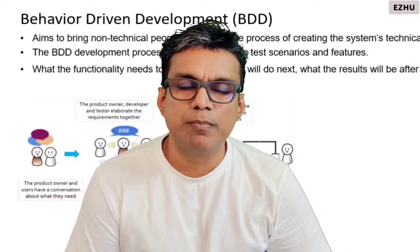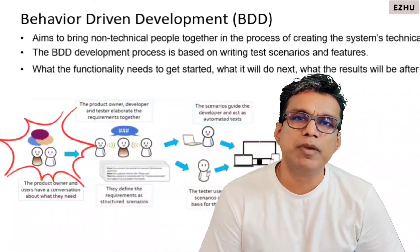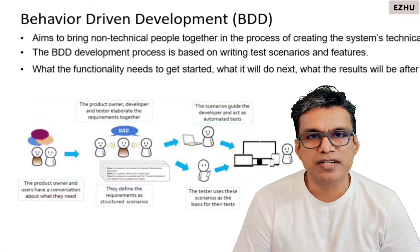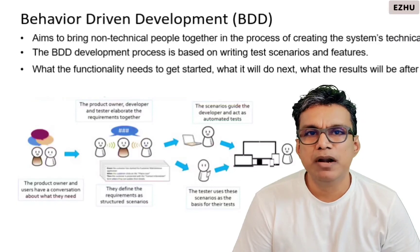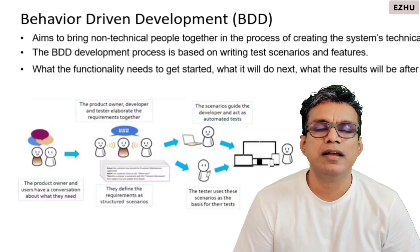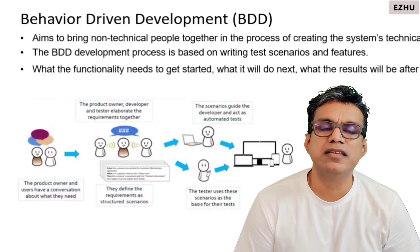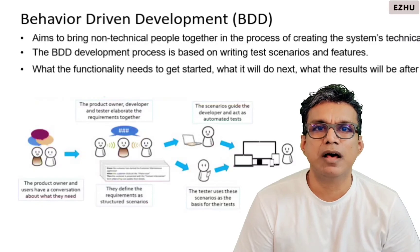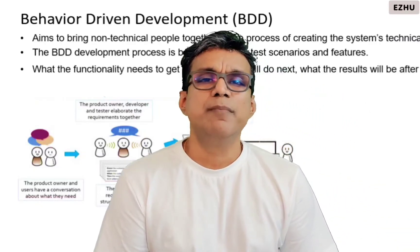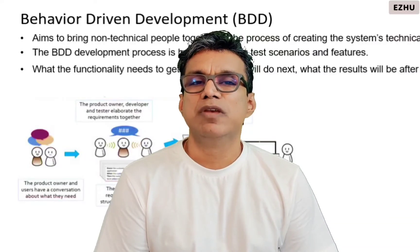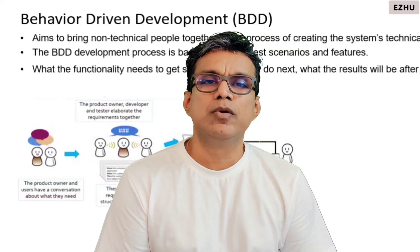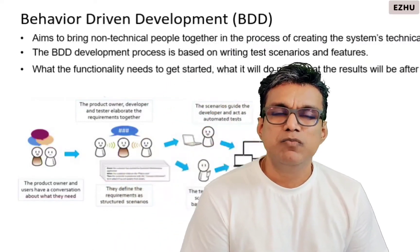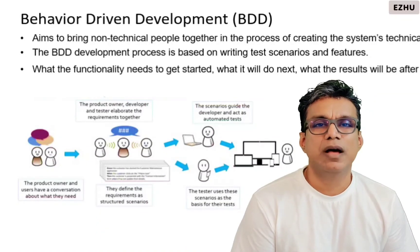Behavior Driven Development aims to bring non-technical people together in the process of creating the system's technical functionality. It is based on building scenarios and features, and this ensures that when a functionality is started, the exact flow, the next steps, and the desired outcomes are well known and understood. It happens sometimes that during development we involuntarily fail to include business functionality in the process, which may lead to serious bugs. This model ensures that such scenarios are avoided.